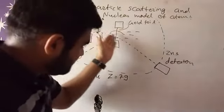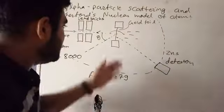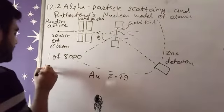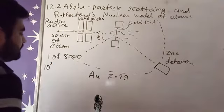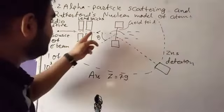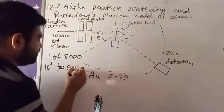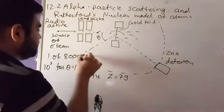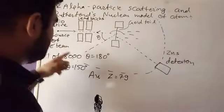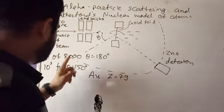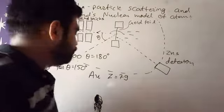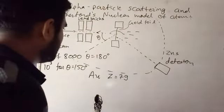Many electrons are scattered in this direction and many electrons are also in this direction. So there will be 10^-3 for theta is equal to - yes, what is the angle here? Theta is equal to 150 degrees. And here for theta is equal to 180 degrees, same path. So one of 8000. And here 10^-3 for theta is equal to 150 degrees.